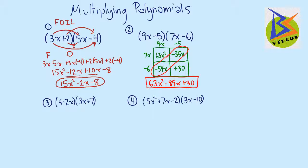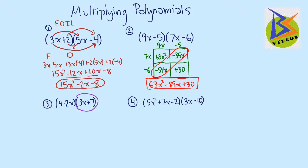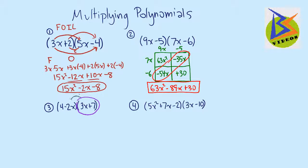A third strategy is we look at this in terms of distributing this whole thing through to each part here. So we can say that we have 4 times 3x plus 7 minus 2x times 3x plus 7. And now what we can do is just distribute this through, distribute this through here. So here we have 12x plus 28 minus 6x squared minus 14x.